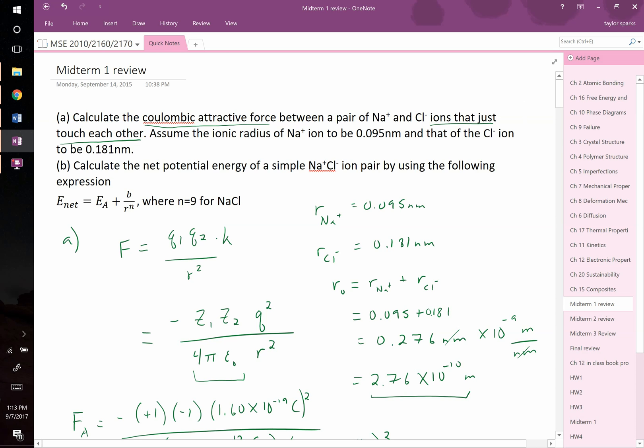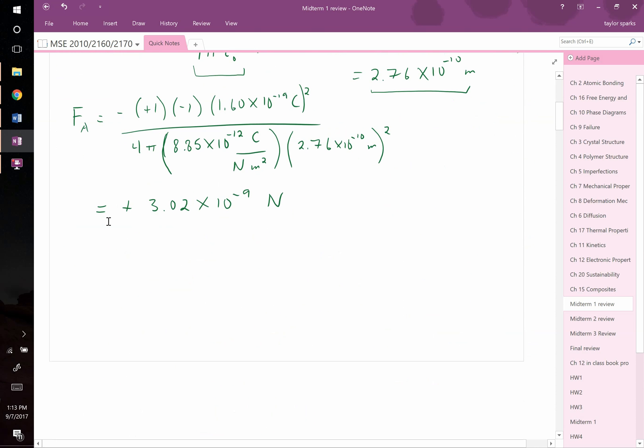Part B says, calculate the net potential energy of a simple sodium chloride ion pair by using this following expression, where the net energy is equal to the attractive energy component plus B over R to the N, where N equals 9 for sodium chloride. So that second term in the energy expression is what's known as the repulsive energy term. Let's recall a few things.